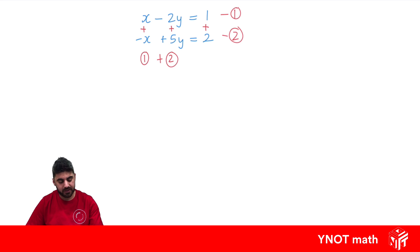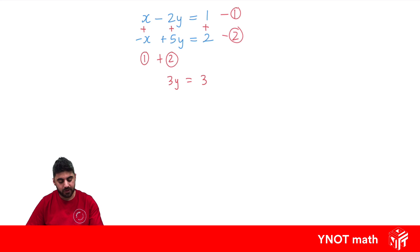x plus minus x is going to be 0 and be eliminated. Then we're going to have minus 2y plus 5y, which is just minus 2y plus 5y, giving us 3y. And then 1 plus 2 equals 3. So we have 3y equals 3, and we've eliminated x. We can solve for y now by dividing both sides by 3, so y equals 1.